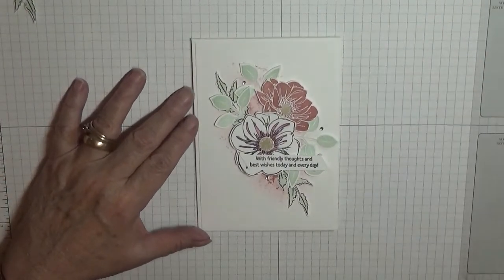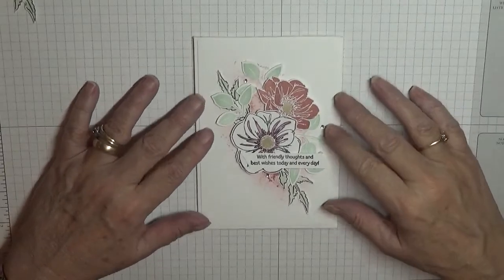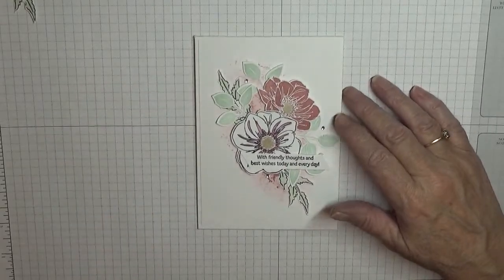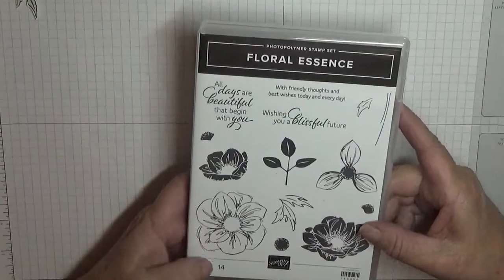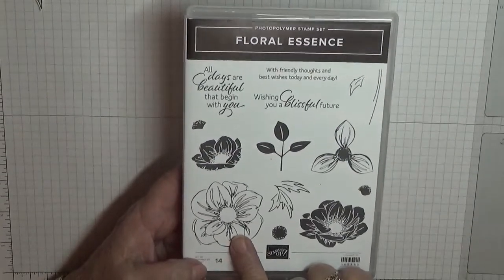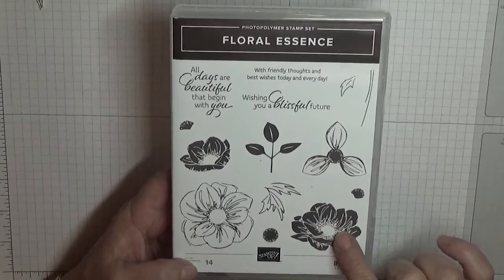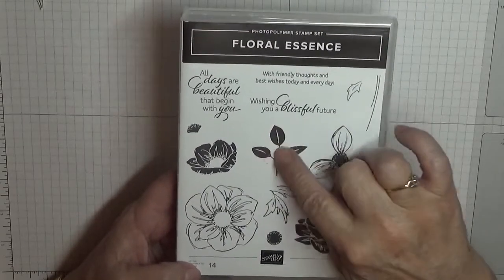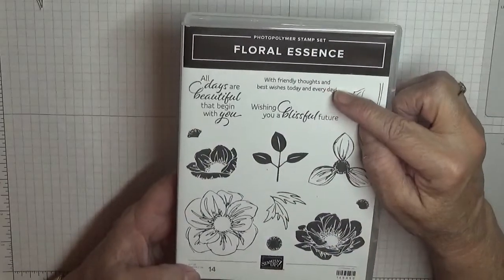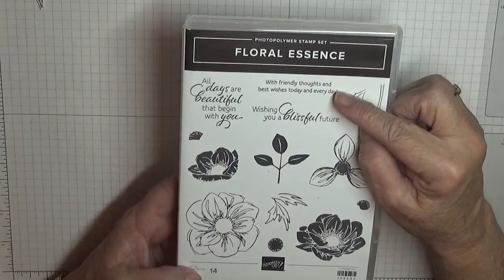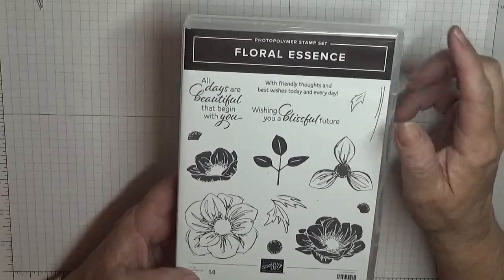Hi everybody, today I'd like to show you how I made this card. I made this card using a stamp set Floral Essence and I used the big flower, the bigger solid flower and the leaf. I also used the sentiment with friendly thoughts and best wishes today and every day.